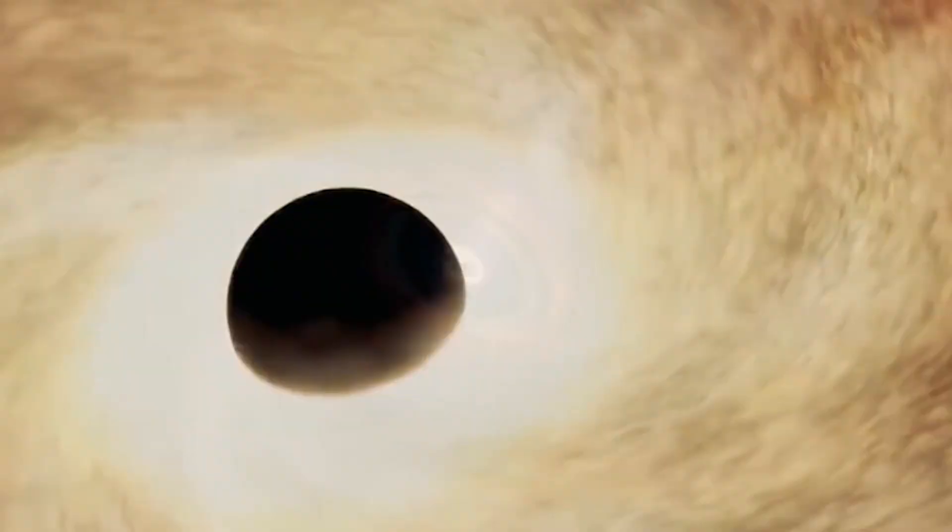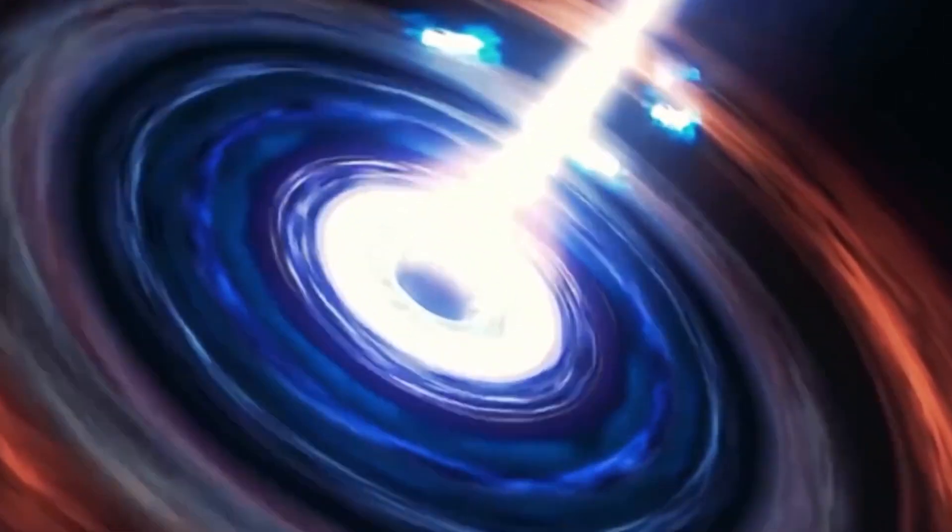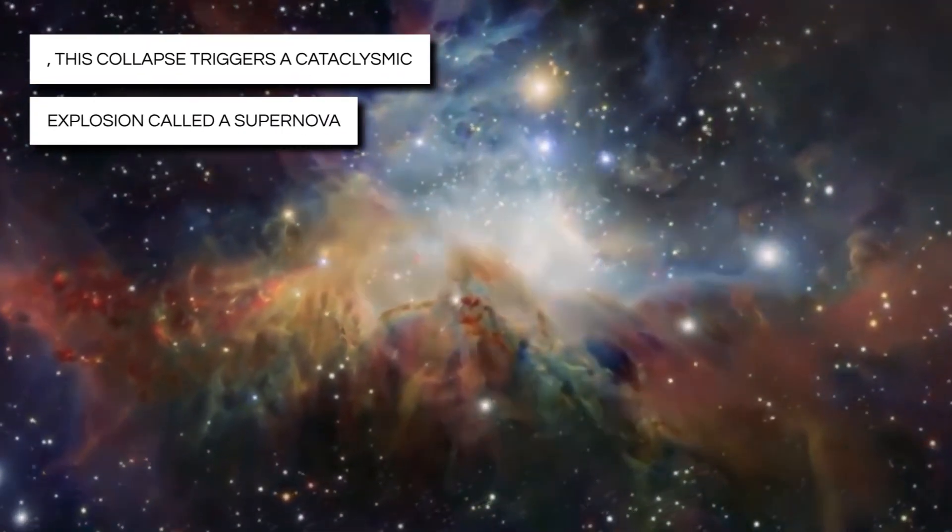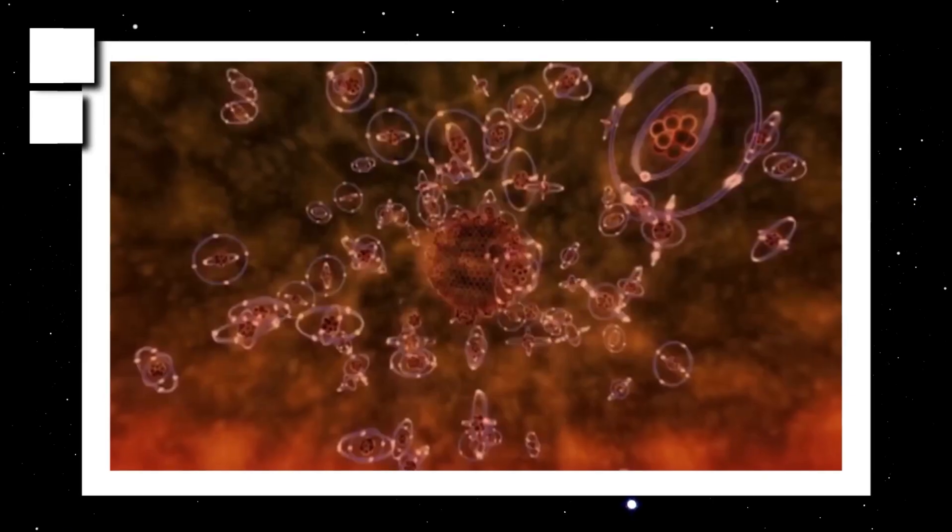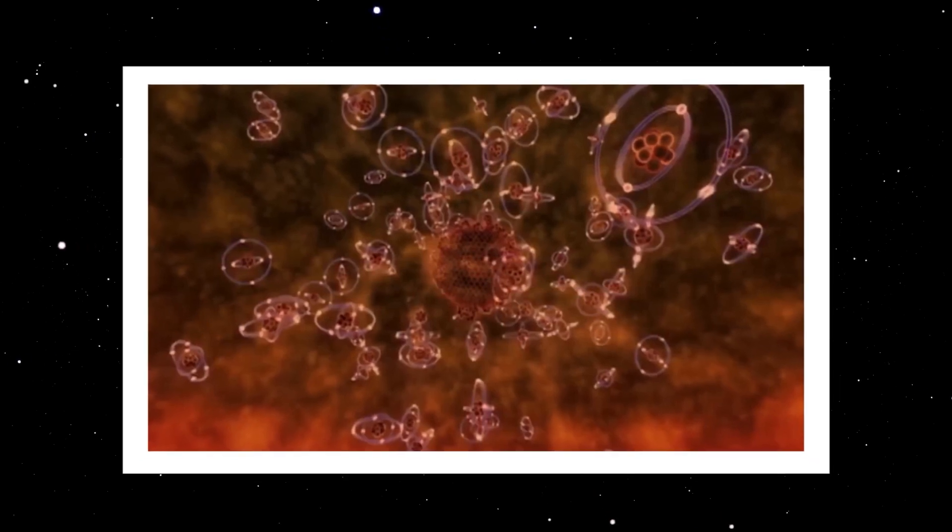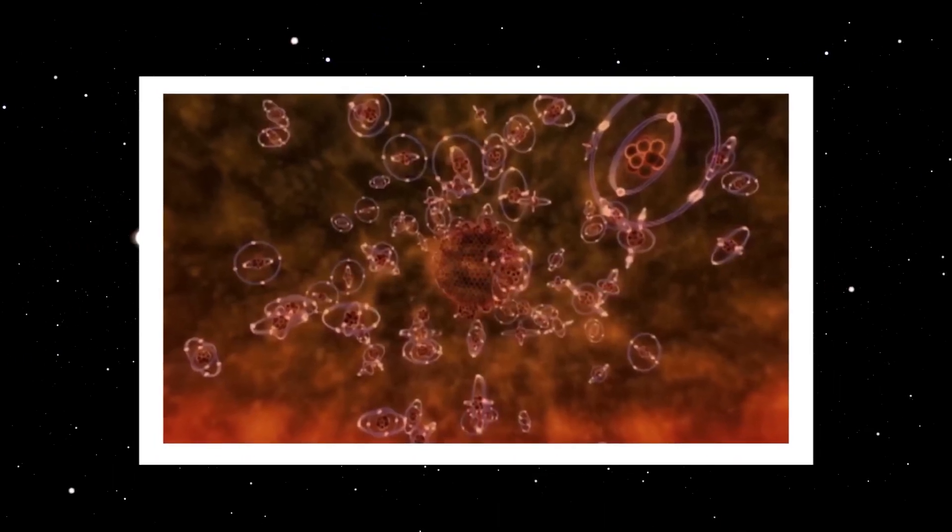However, when the fuel runs out, the star starts to shrink under its immense gravity. For massive stars, this collapse triggers a cataclysmic explosion called a supernova. The core of the dead star, if it is massive enough, becomes an ultra-dense ember called a neutron star.